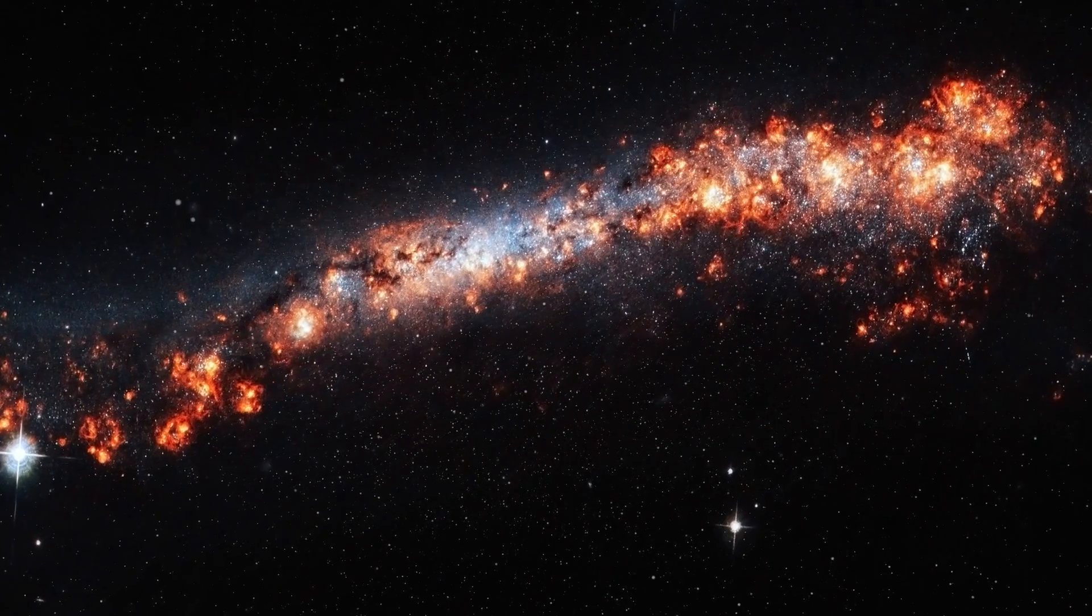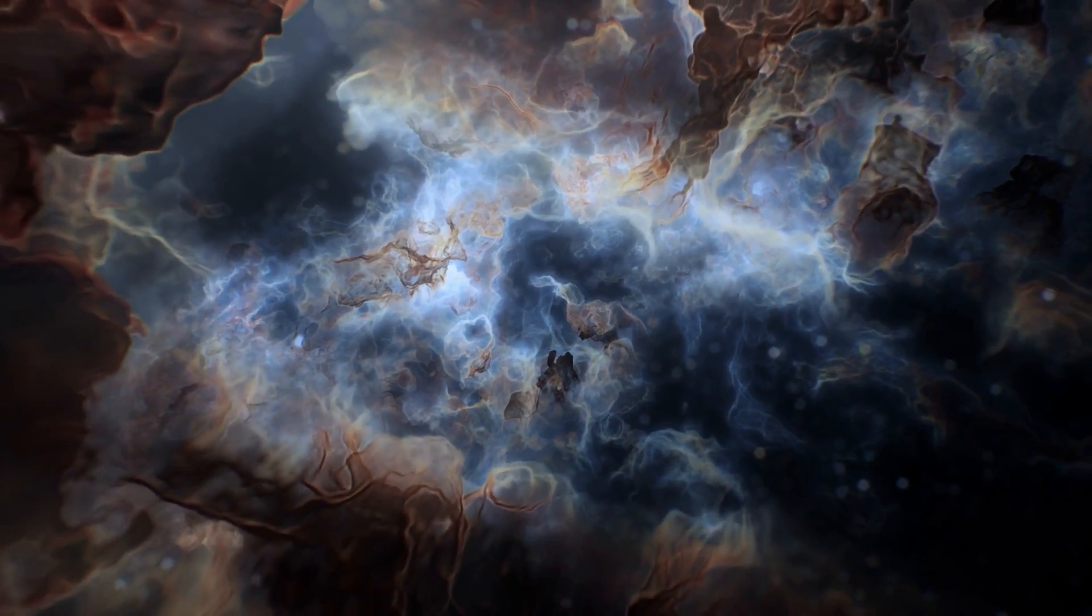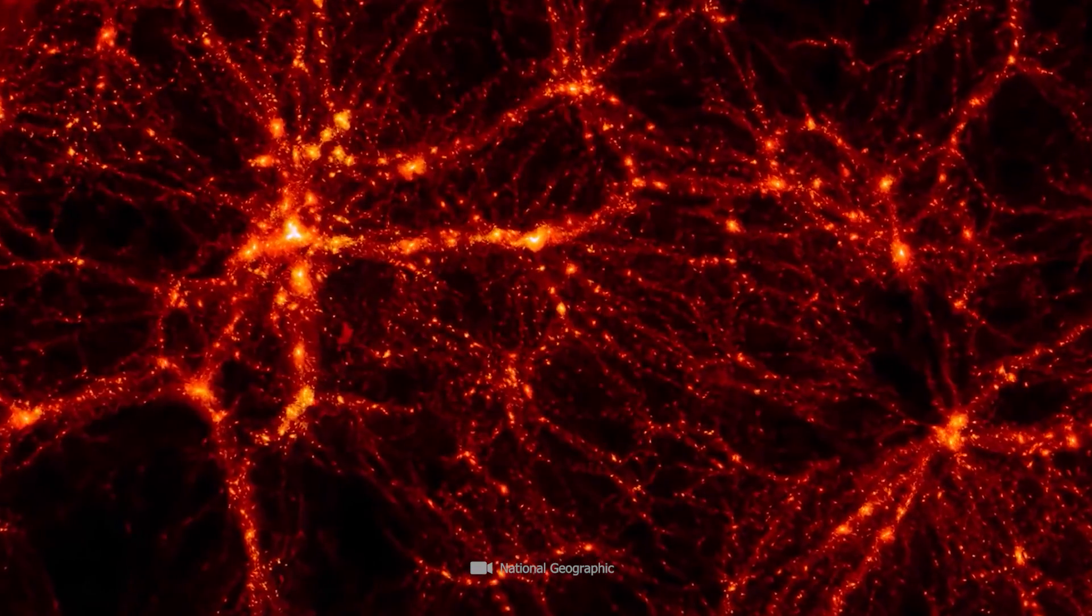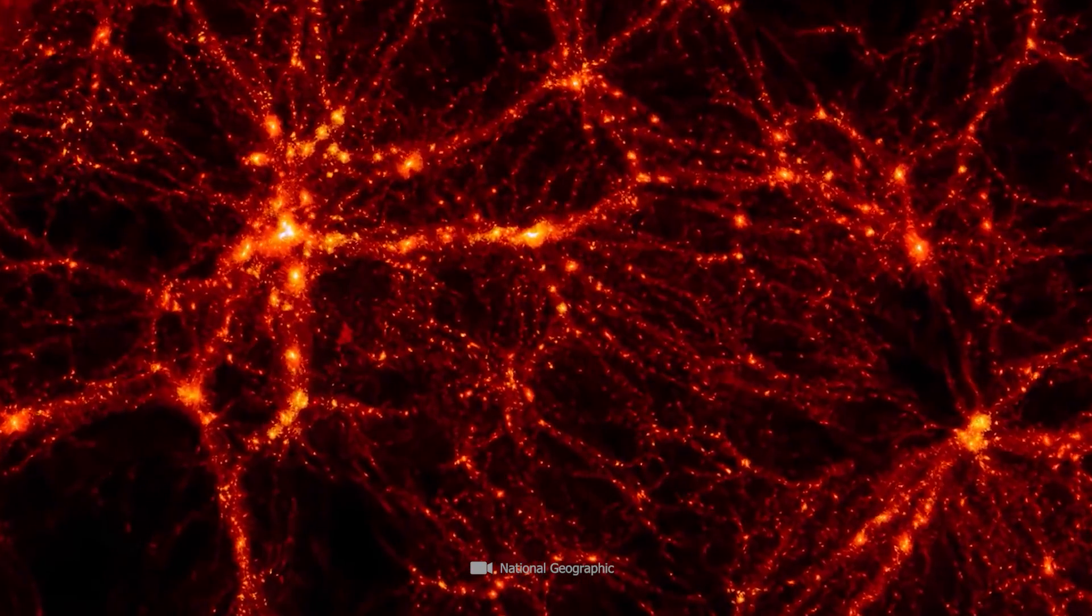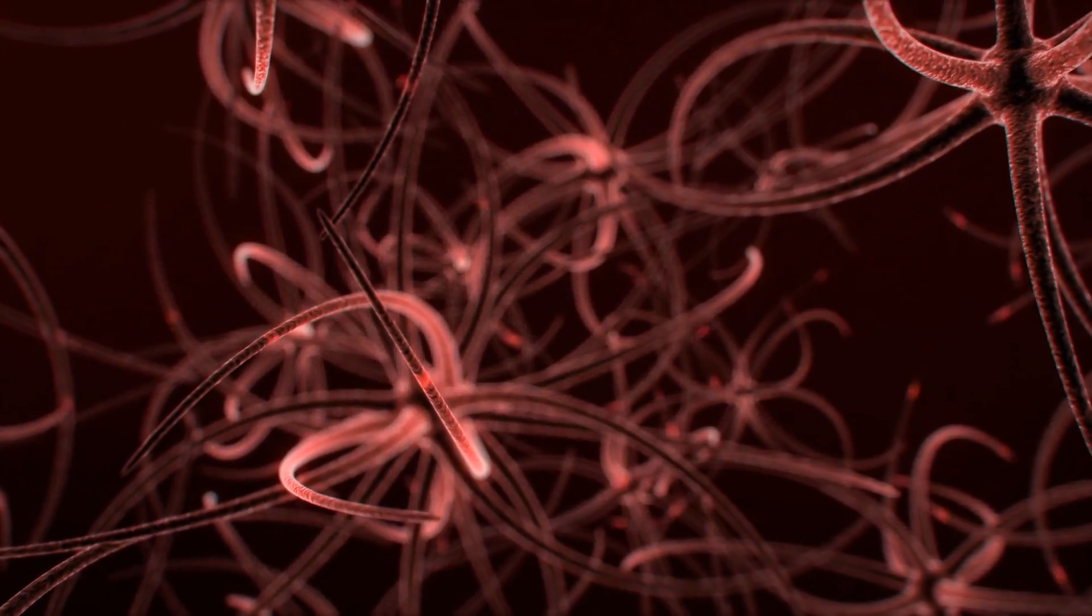What is striking, apart from the similarity of the structures and organic forms in the universe, is the high level of connectivity within the two networks. Everything in the universe is networked along the filaments and countless structures in the cosmic tissue, just as nerve cells are networked in our bodies.